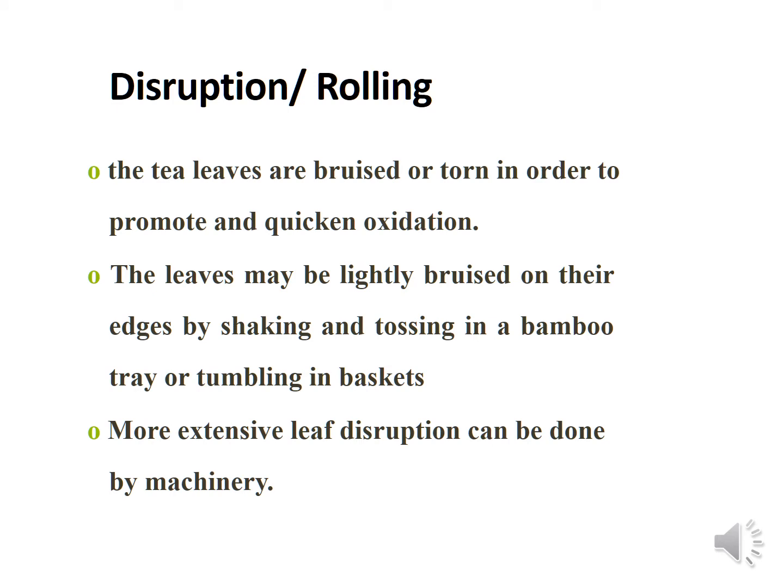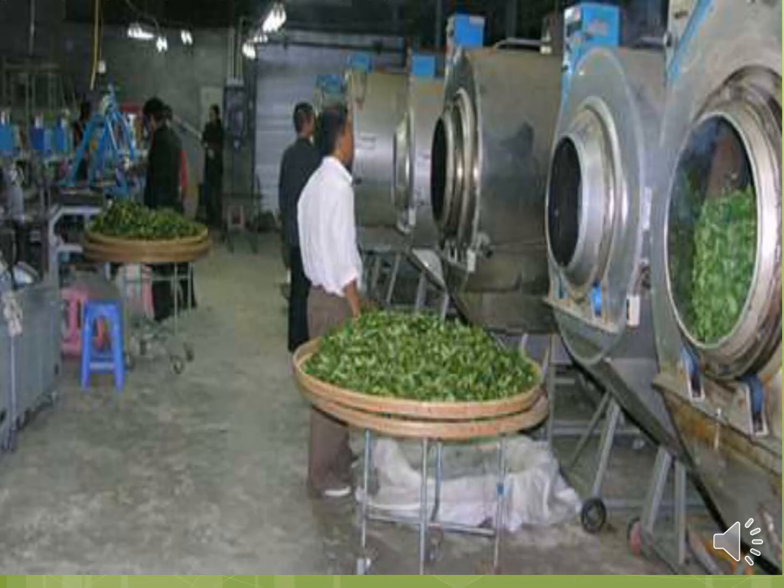Next comes disruption and rolling. Tea leaves can be bruised — damaged and tossed — so that oxidation proceeds properly. They can be shaken from their edges, tossed in a bamboo tray, or tumbled in baskets. More extensive leaf disruption can be done by machinery. As you can see in the image, this is the disruption and rolling process.